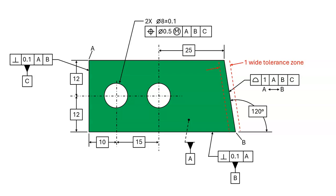Now consider the profile tolerance. The tolerance zone is two parallel planes, 1 mm apart. At the top of the part, the tolerance zone is centered exactly 50 from datum C. The tolerance zone is on a 120 degree angle from datum B. The surface must fit within the tolerance zone. There is no sense of a plus minus dimension relative to datum C.